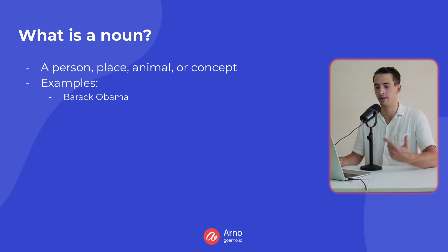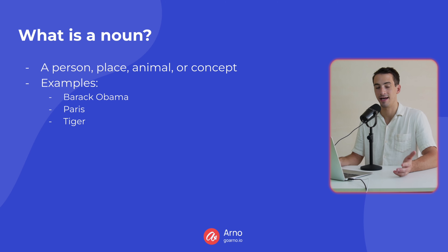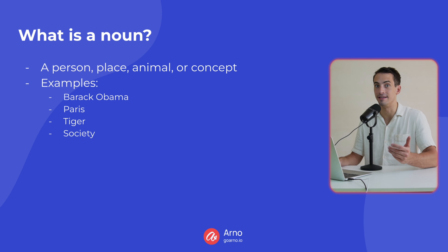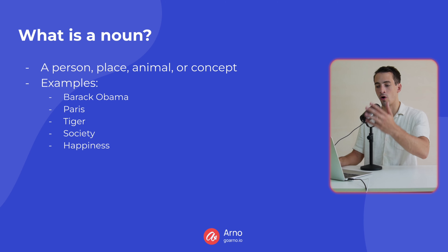Here are examples. Barack Obama — that's a person. Paris — that's a place. A tiger — that's an animal. Society — that's a concept. Happiness — that's a concept. So, these are all nouns.